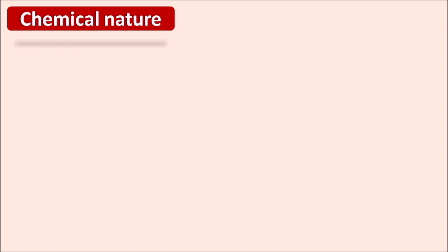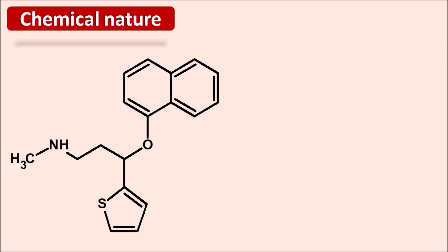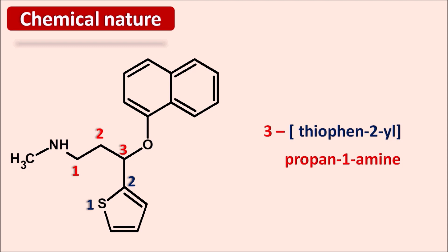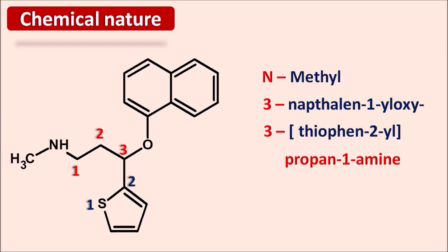Now let us see the chemical nature of Duloxetine. This is the structure of Duloxetine, and here the amine is the principal functional group. Starting the numbering from the amine: one, two, three. This amine group is attached to a propyl chain, so the suffix of the name is propane-1-amine. At the third position of the propane-amine, a heterocyclic ring system is present — thiophene. Numbering thiophene: one, two. Thiophene is attached by its second position to the third position of the main chain, written as 3-(thiophen-2-yl). Similarly, at the third position a naphthalene ring is attached through oxygen, written as 3-(naphthalen-1-yloxy). Finally, a methyl group is present on the amine, so it is N-methyl. This is the complete name of Duloxetine.